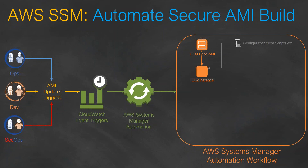Now we have created an instance and we are going to apply some configuration files, binaries, or packages that are required. For example, scripts and configuration files are added. Then binary agents come into picture — your monitoring agent, backup agent, vulnerability scanning agent — and any performance or fine-tuning configurations that need to be deployed into all your environments. Now your instance has the base configuration.